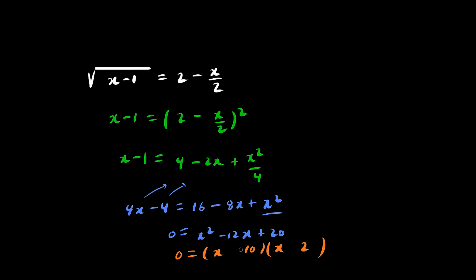Let's try 10 and 2, negative negative. Indeed, negative 10 times negative 2 is 20, and they add to be negative 12. So therefore, our potential solutions are x equals 10 and x equals 2.